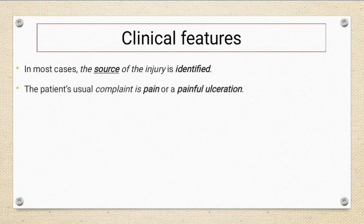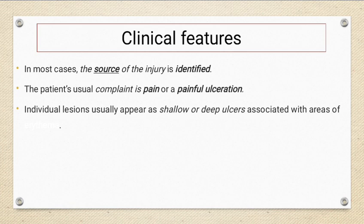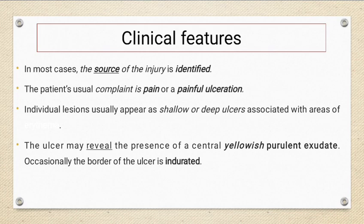Clinical features are related to the source of injury. In most cases the source of injury can be identified easily. The patient may come complaining of pain or discomfort, but most of these ulcers are painful, especially when the patient presents in the initial phase. Individual lesions usually appear as shallow or deep ulcers associated with the area of trauma. The depth is related to the cause of the trauma.